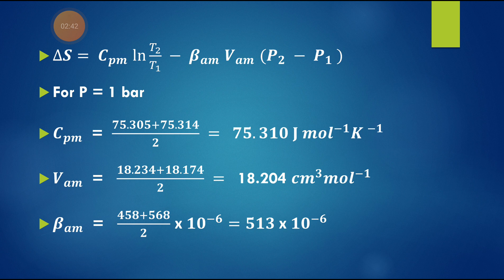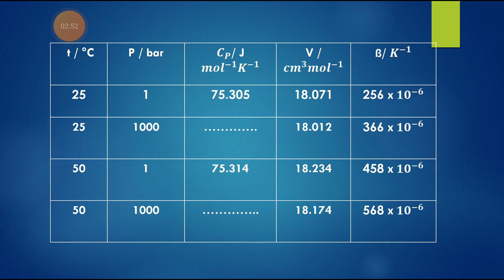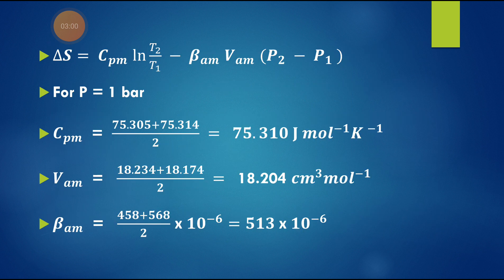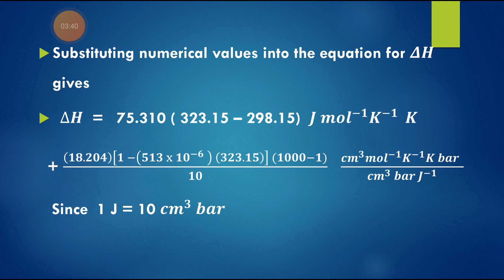Similarly, delta S is CPM · ln(T2/T1) minus beta_AM · VAM into (P2 minus P1). For pressure equal to 1 bar, we calculate the arithmetic mean values: CPM is (CP1 plus CP2) by 2, giving 75.310 J/mol·K. VAM is (V1 plus V2) by 2, giving 18.204 cm³/mol. Beta_AM is (458 plus 568) by 2 into 10⁻⁶, which equals 5.13 × 10⁻⁴ K⁻¹.